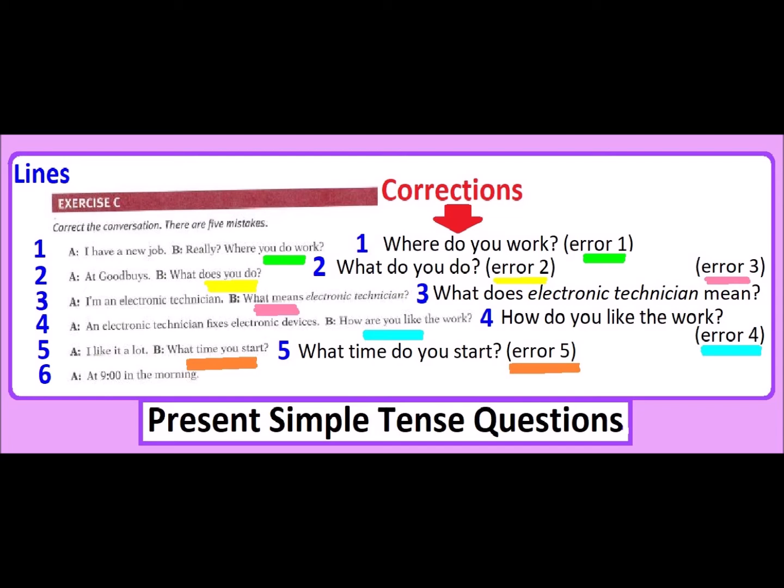Question words are followed by auxiliary. Let's look at all these five questions and you see: WHERE DO YOU WORK—where is followed by DO. WHAT DO YOU DO—what is followed by DO. WHAT DOES, number three, followed by DOES. HOW DO YOU LIKE—always question word, or WHAT TIME is a group of words, question words followed by auxiliary. WHAT TIME DO YOU START, number five.